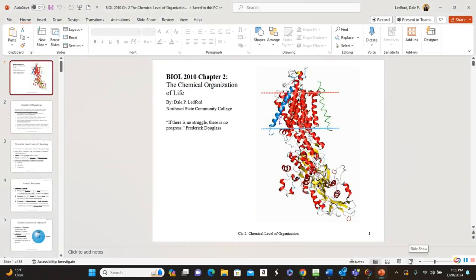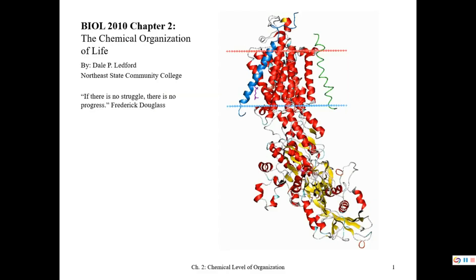Hello everyone, and welcome to chapter two. So chapter two — just reminding you, if there is no struggle, there is no progress. So let's keep progressing through the content together. We're looking at some chemistry — the chemical level of organization, chemical organization of life. This is very important because it's going to set the stage for a lot of physiology.